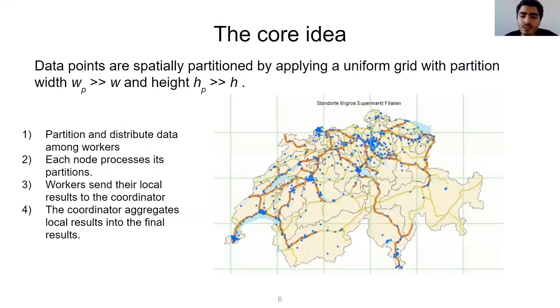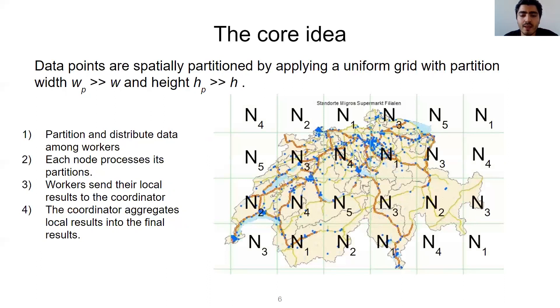As I said, we start by dividing the space into partitions that are larger than the query window. Then, we distribute these partitions among the available nodes. Some nodes may receive more than one partition. Then, each partition runs the algorithm locally on the region it possesses, and sends the local results to the coordinator. The coordinator, after collecting the local results, aggregates them to output the final results.